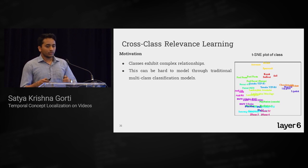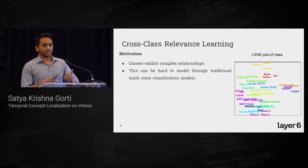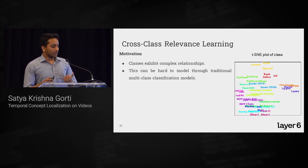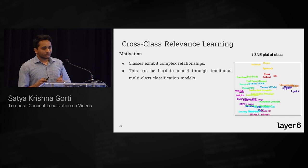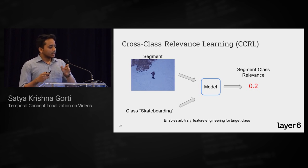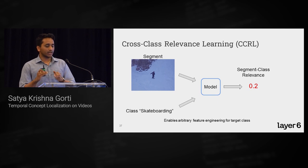To exploit this structure traditionally, you'd need to design a hierarchical loss or some weighted loss, which is very hard to train with a gigantic model having tens of millions of parameters. Instead, CCRL uses a joint model that takes segment features and a class embedding as a pair and predicts a joint segment-class relevance score.